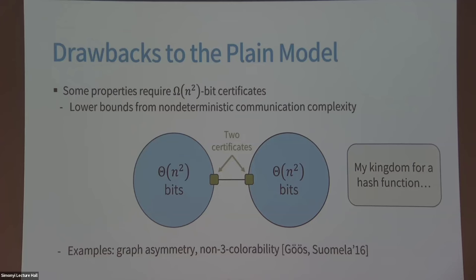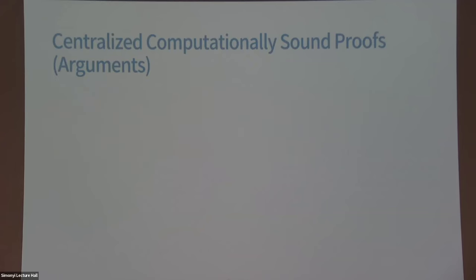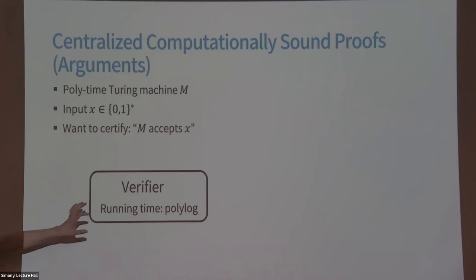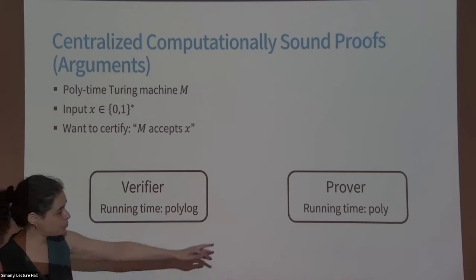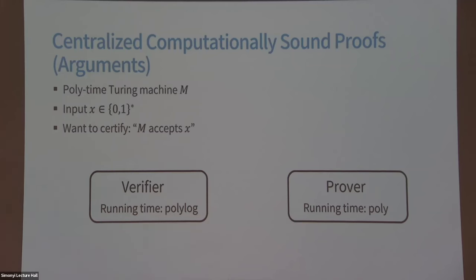Our work is a computationally sound version of these distributed proofs. First, some background on computationally sound proofs in the centralized sense. The setup: we have some polynomial-time Turing machine and an input, and we'd like to check if this machine accepts the input. We have a super-efficient verifier running in polylogarithmic time in the length of the input, and a prover that is more powerful than the verifier — running in polynomial time. Both the verifier and prover know the input x, and they have some shared randomness.